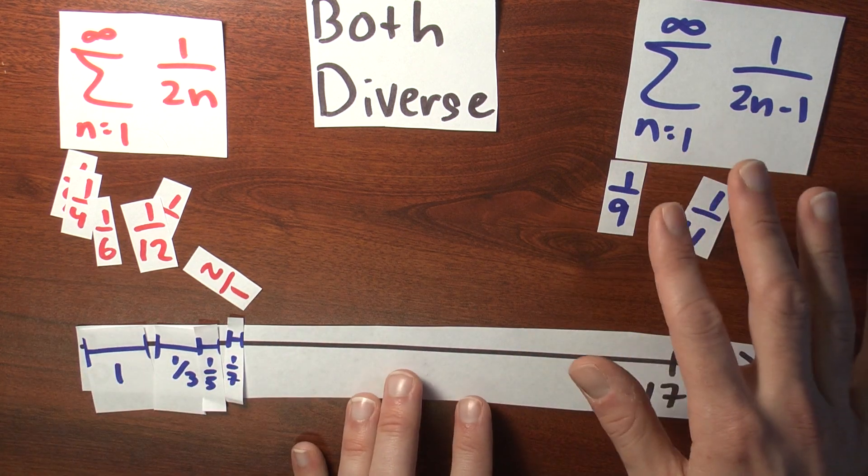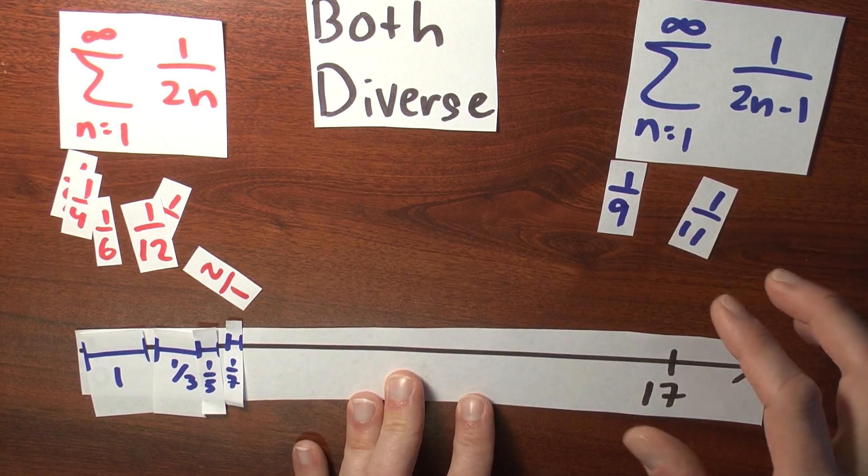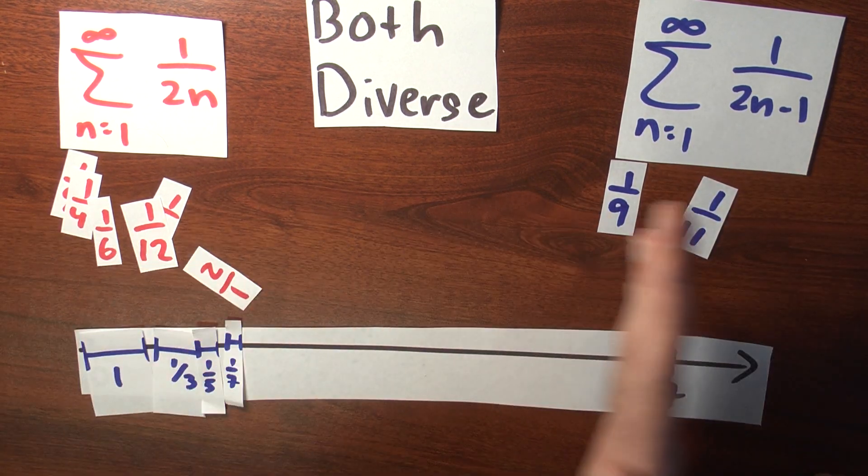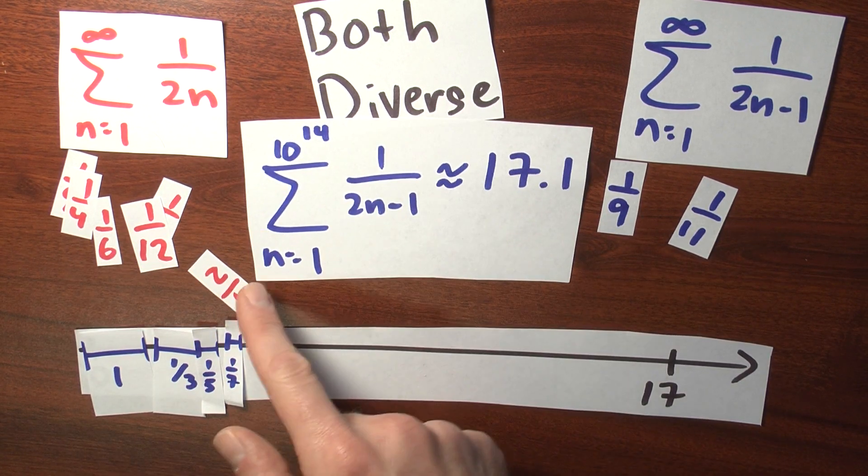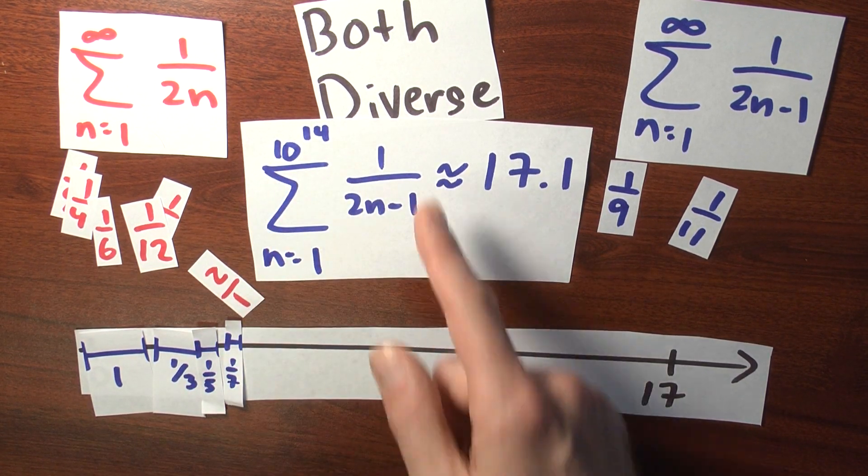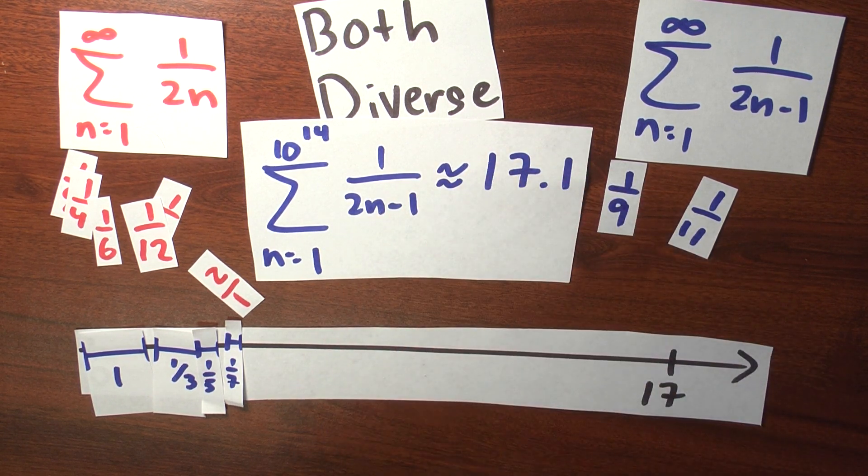I mean, the trouble, of course, is that these numbers are getting smaller. But I know that this series diverges. So if I keep taking numbers from this pile, I can move as far to the right as I like. And indeed, it happens that the sum n goes from 1 to 10^14 of 1 over 2n minus 1 is a bit bigger than 17. It's 17.1.